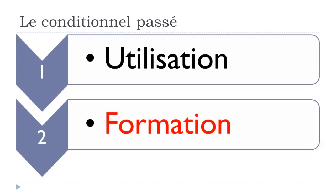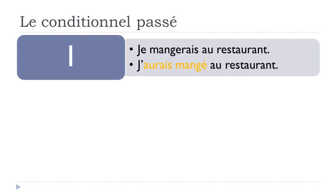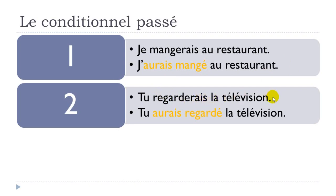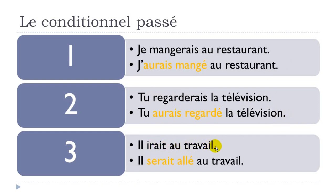Now let's see how we make the conditionnel passé. First example: Je mangerais au restaurant (conditionnel présent) becomes J'aurais mangé au restaurant (conditionnel passé). Second example: Tu regarderais la télévision becomes Tu aurais regardé la télévision. And: Il irait au travail becomes Il serait allé au travail.